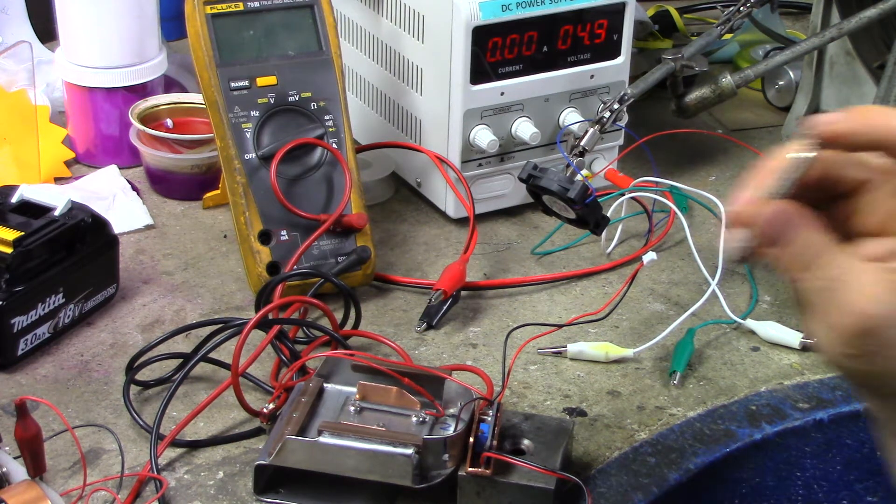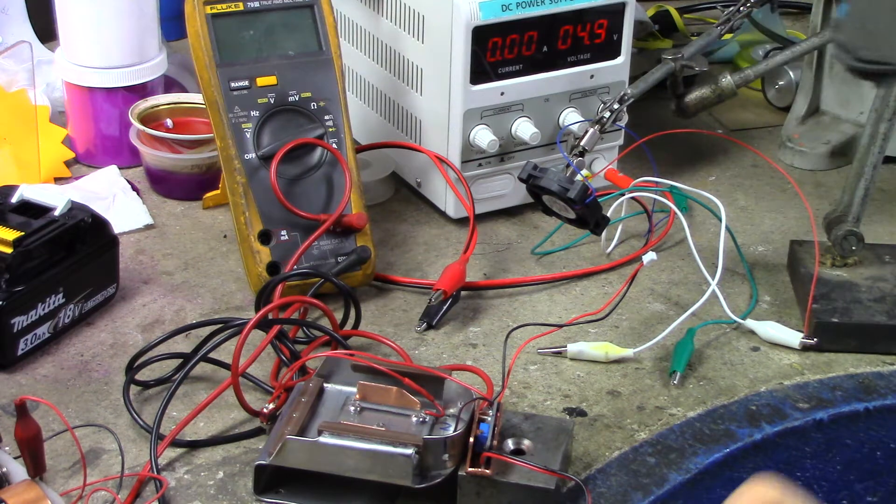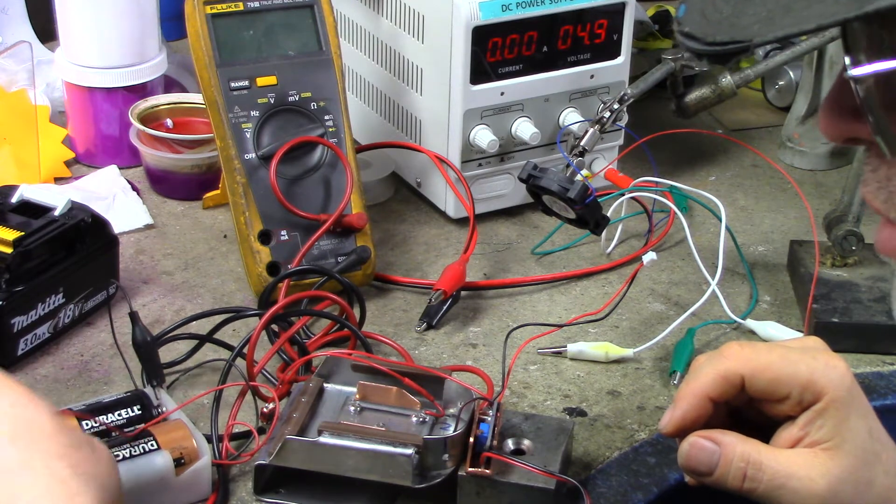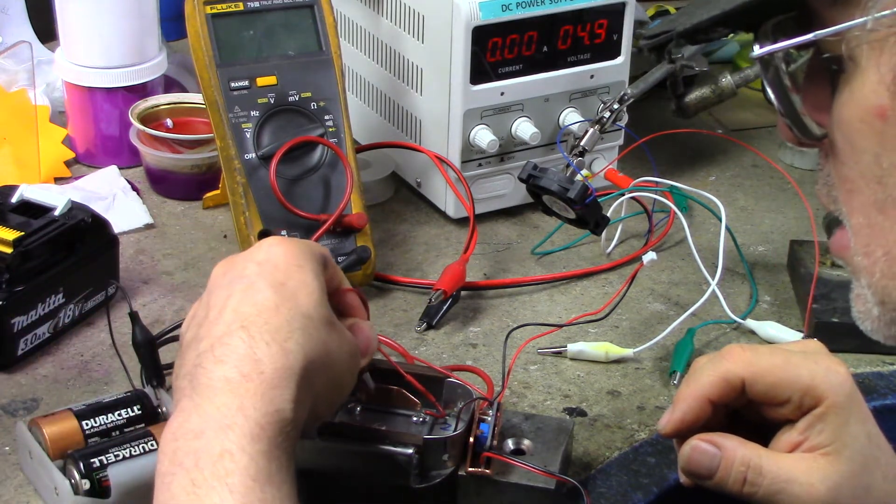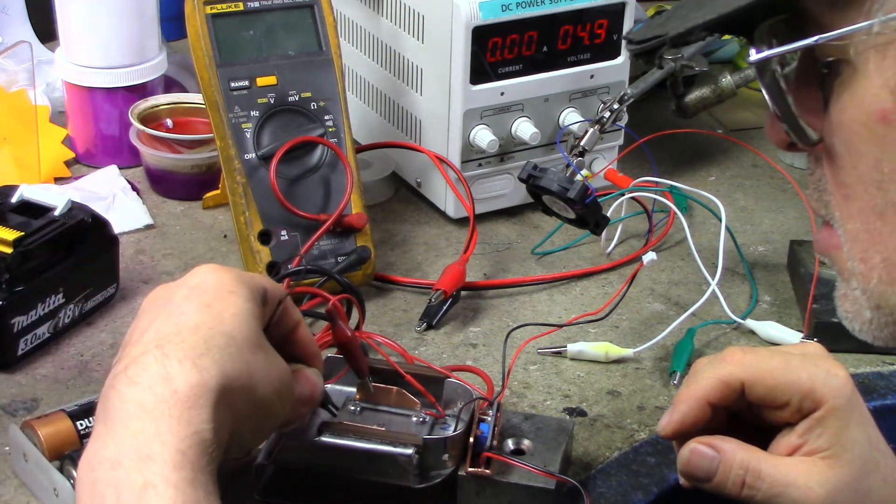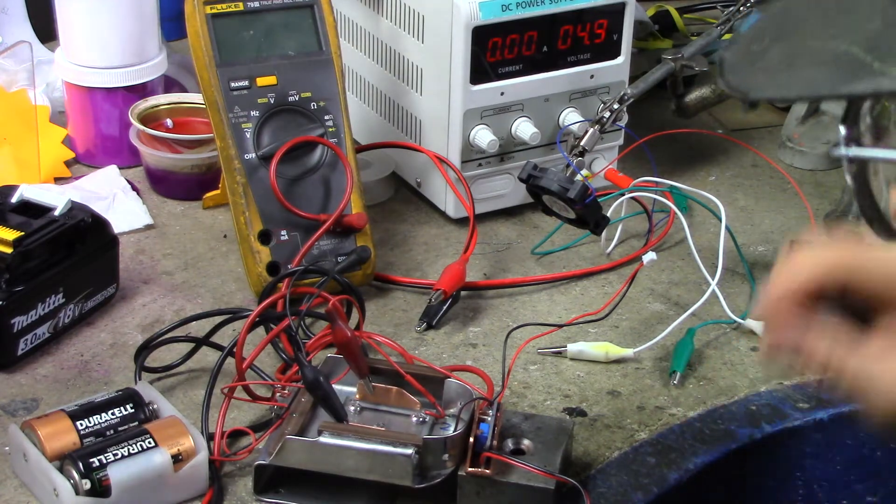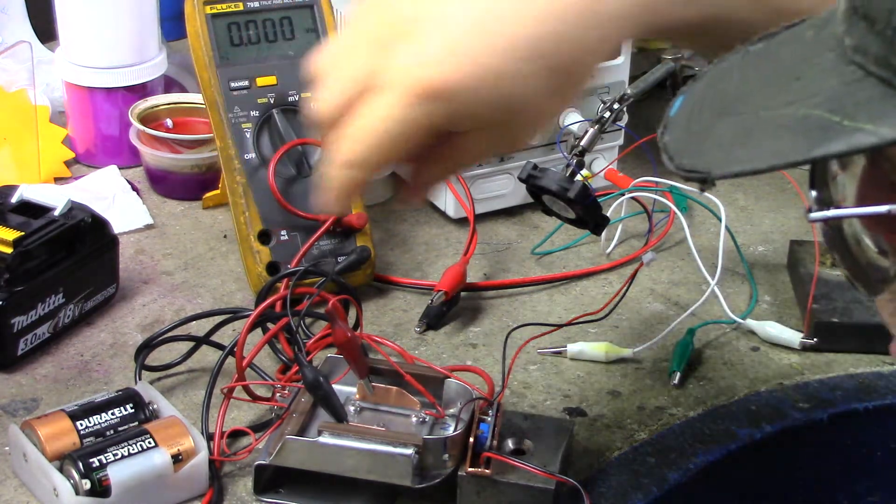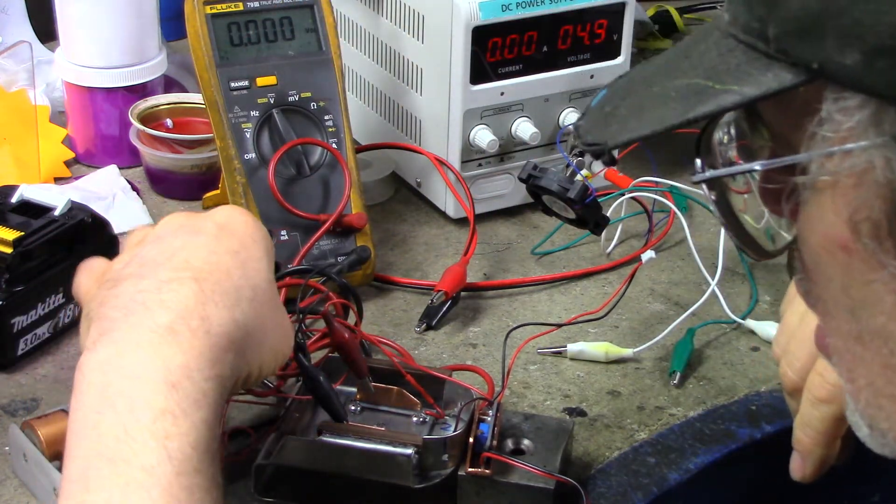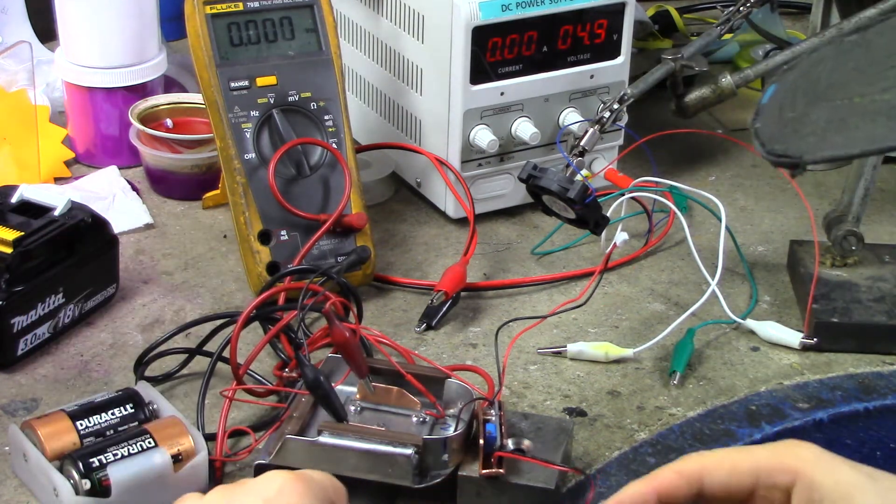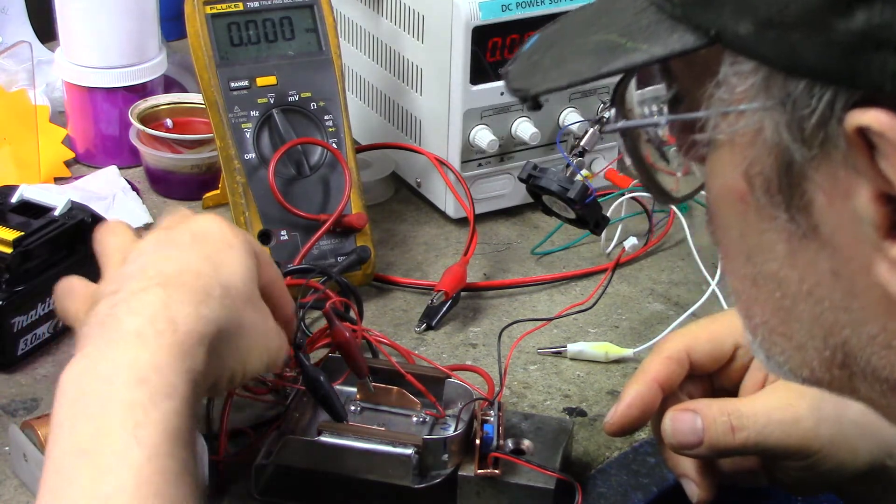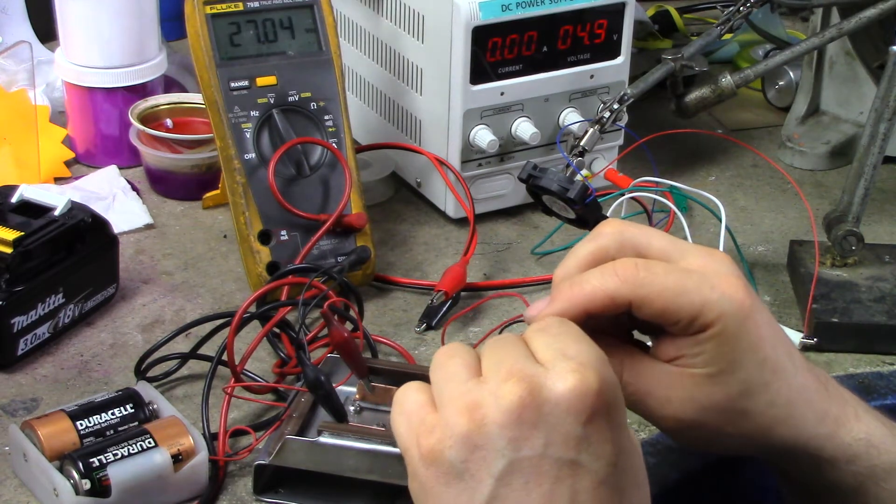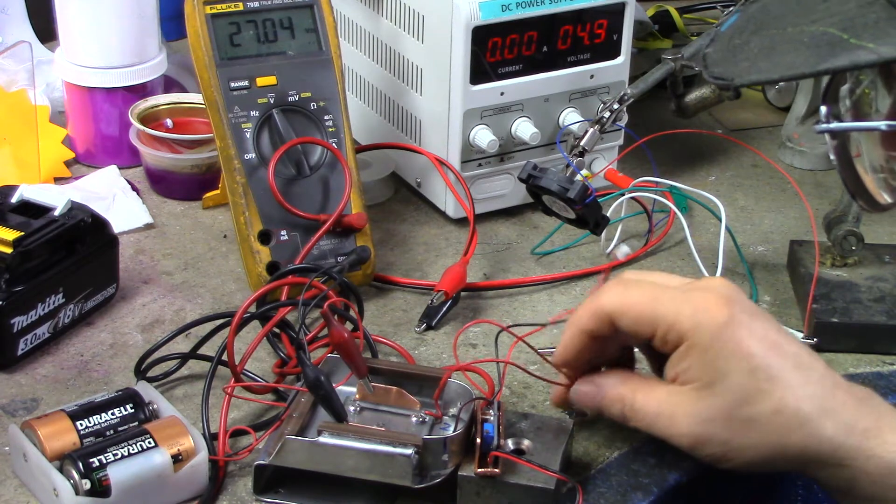Turn this counterclockwise all the way, and then plug it into a very low power source. So I've got two D-cells here. I'm going to clip them to my contacts and turn it on. The multimeter is attached to the outputs of this, so let me turn it on here.